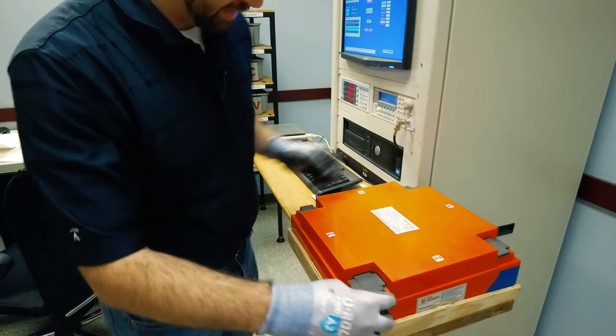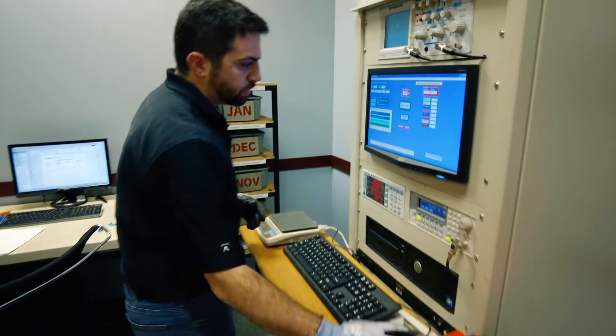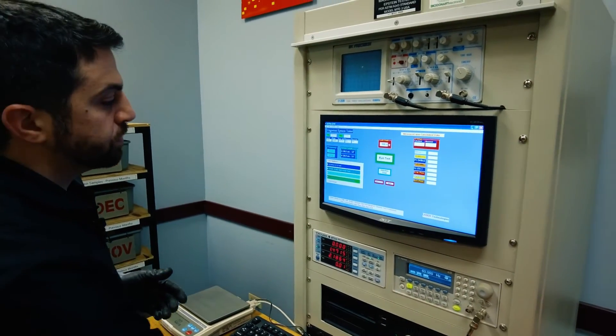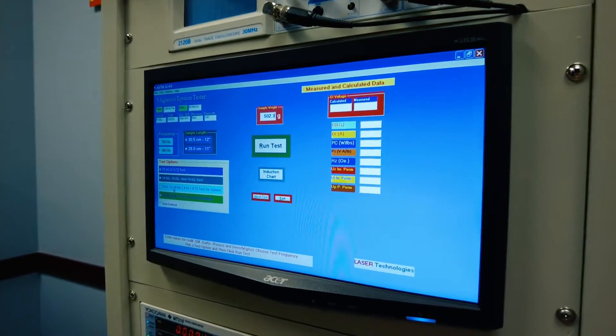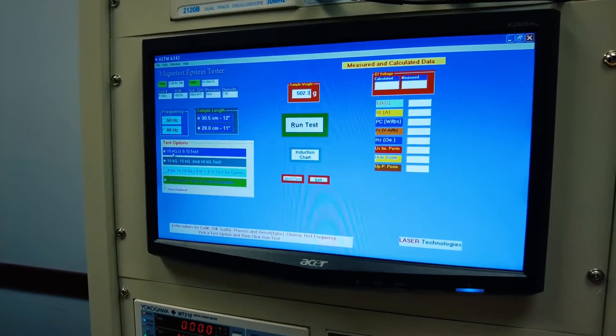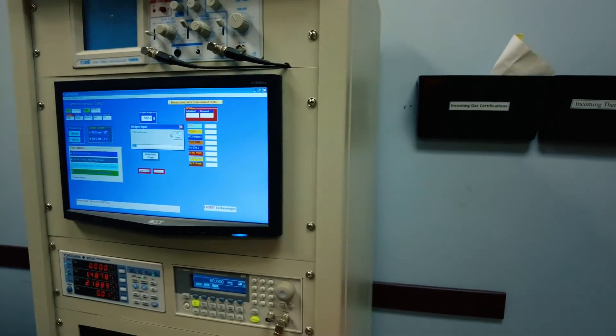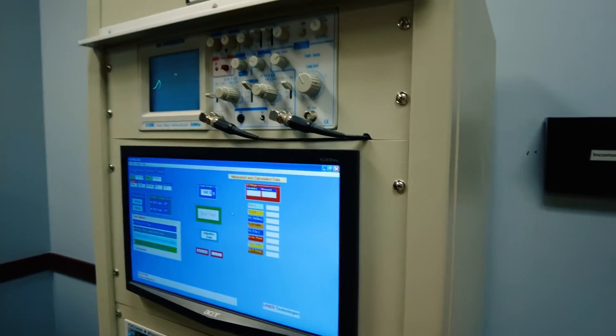Making sure everything is nicely aligned and seated correctly. We can test at both 50 and 60 Hertz and at any range between 4 kilogauss up to 18 kilogauss. For this test I'll pick the standard 15 kilogauss. My weight is already entered and my density is already entered, and the test will start running.